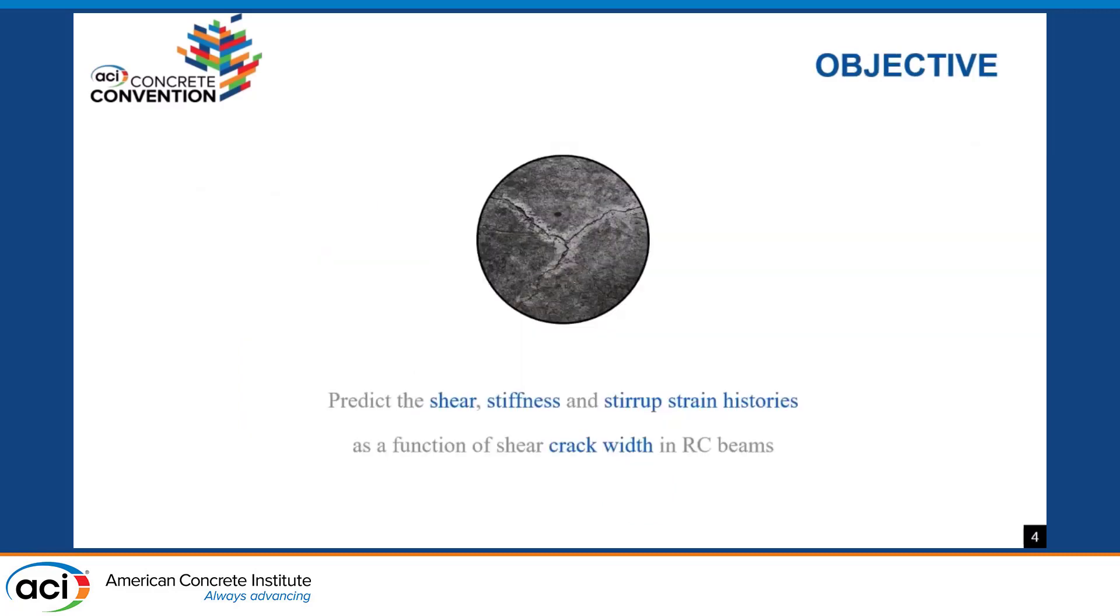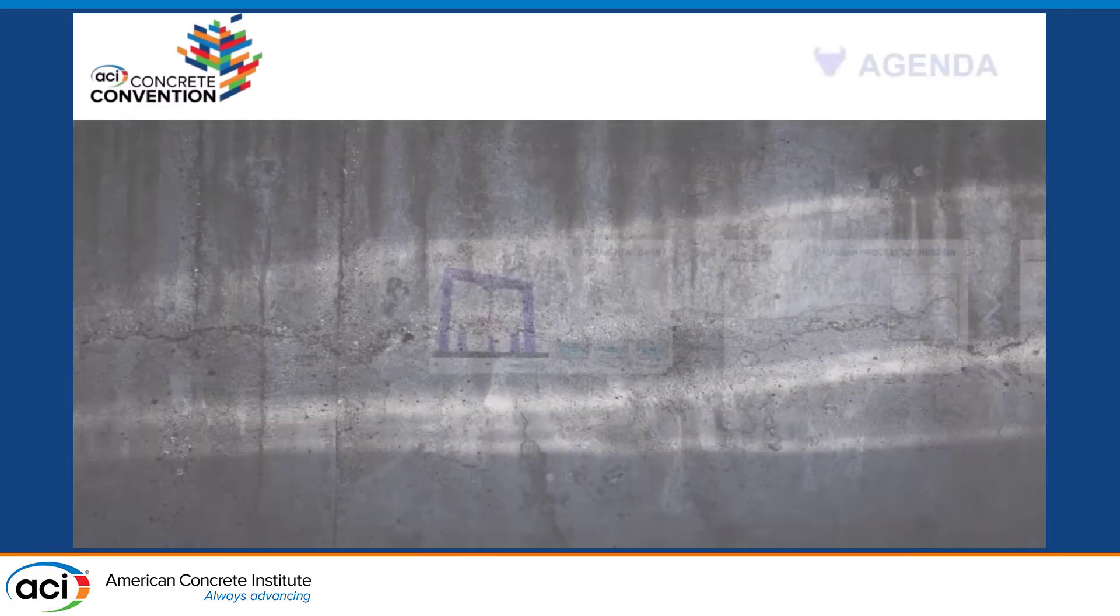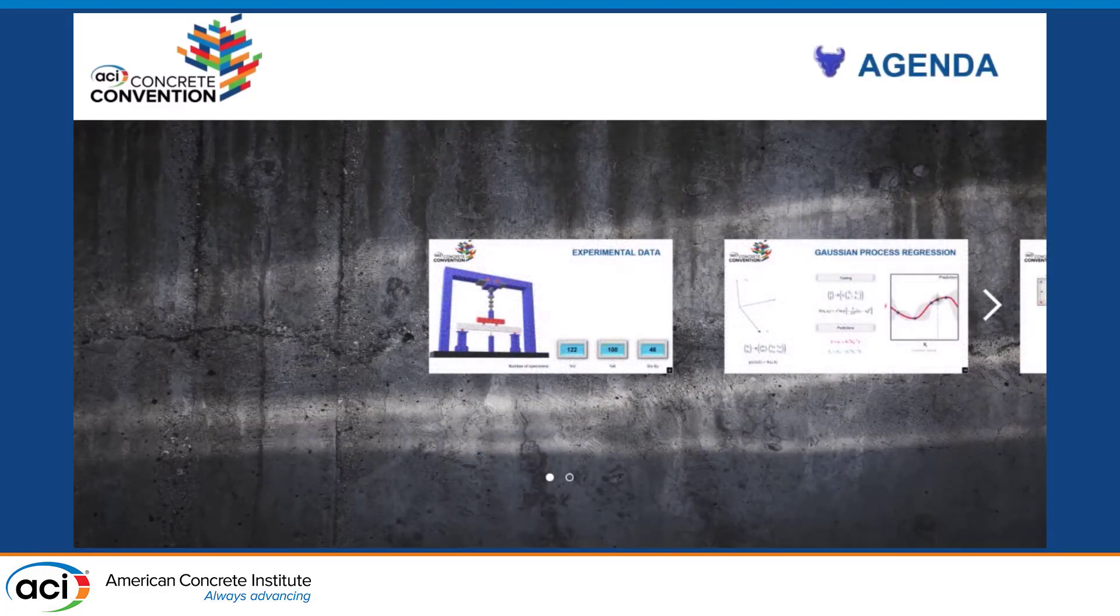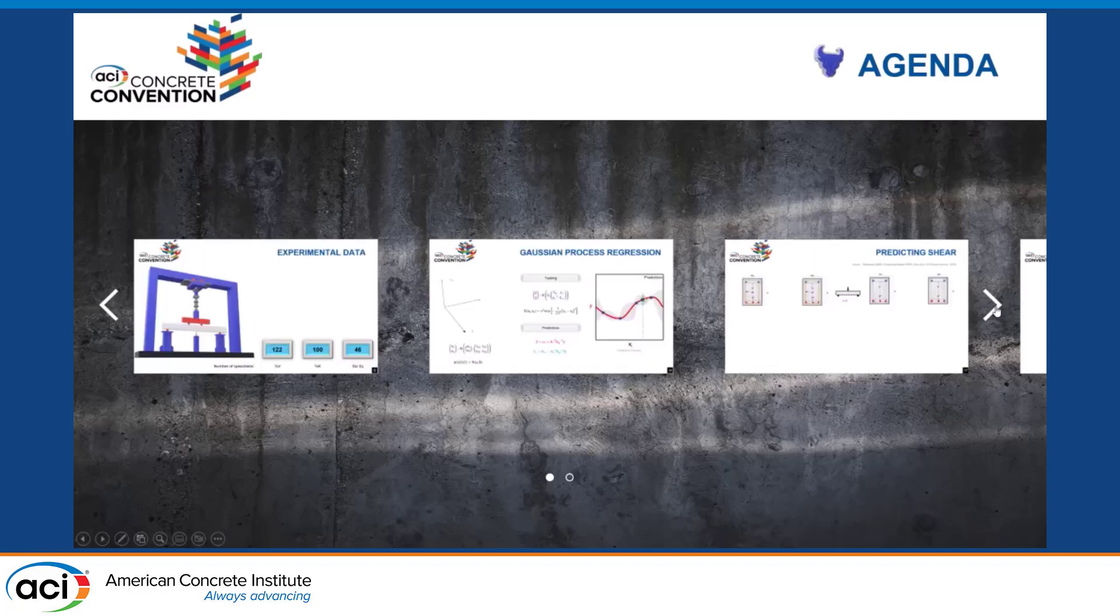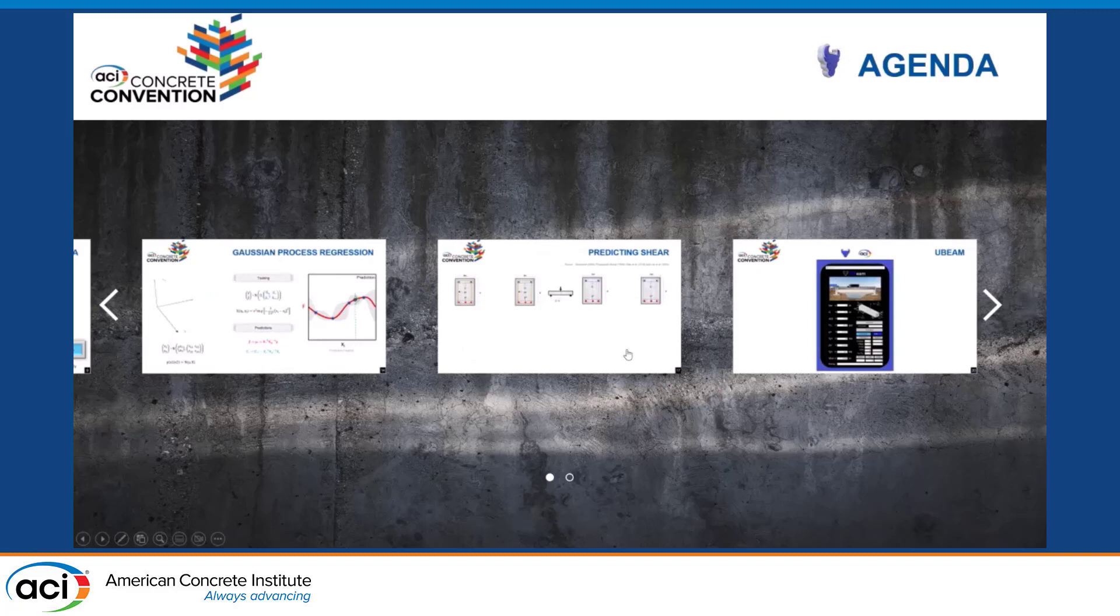The objective is to predict shear stiffness and stirrup strength histories as a function of the shear crack width in reinforced concrete beams. I will show you the experimental data that we collected from literature, the machine learning approach that we are using, some predictions in beams that were not even part of the training sets, and the expected outcome of this research.